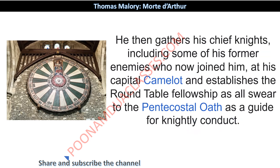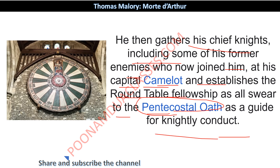King Arthur wanted that everyone in his court be considered equal, and no one should fight with another based on status or rank. As the surrounding lords began to have a little confidence in this king, he gathered his chief knights together, along with some former enemies, at his capital Camelot, and established the Round Table fellowship as all swore to the Pentecostal Oath. The Pentecostal Oath is a guide for knightly conduct — a representation that everyone who joined the Round Table is very chivalric, very kind, very brave, and adheres to all the rules and principles of being a gentleman.